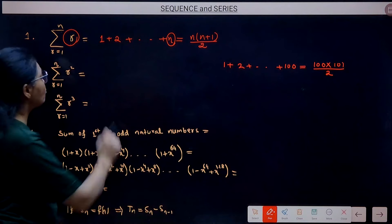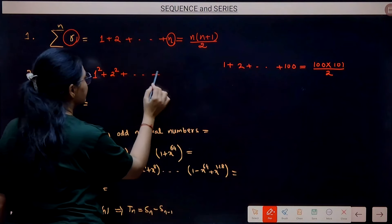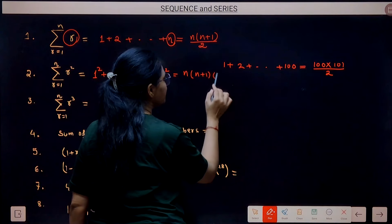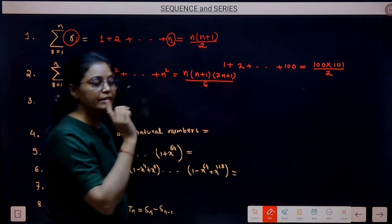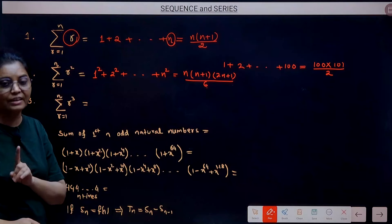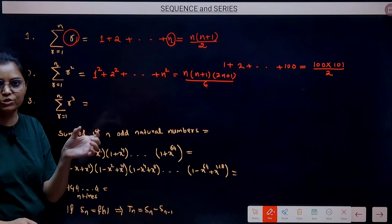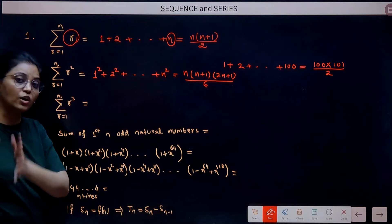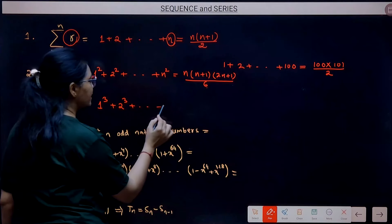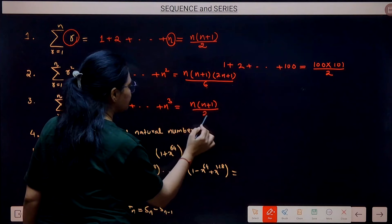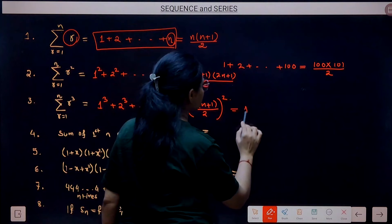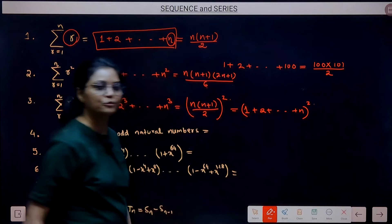Second: sum of squares of first n natural numbers — sigma of r², r from 1 to n, which is 1² + 2² + ... + n². The formula is n(n+1)(2n+1)/6. Third: sum of cubes of first n natural numbers — sigma of r³, which is 1³ + 2³ + ... + n³. The formula is [n(n+1)/2]², which is exactly the square of the sum of first n natural numbers. You need to remember up to cubes; beyond that, questions appear in limits or infinite series chapters.